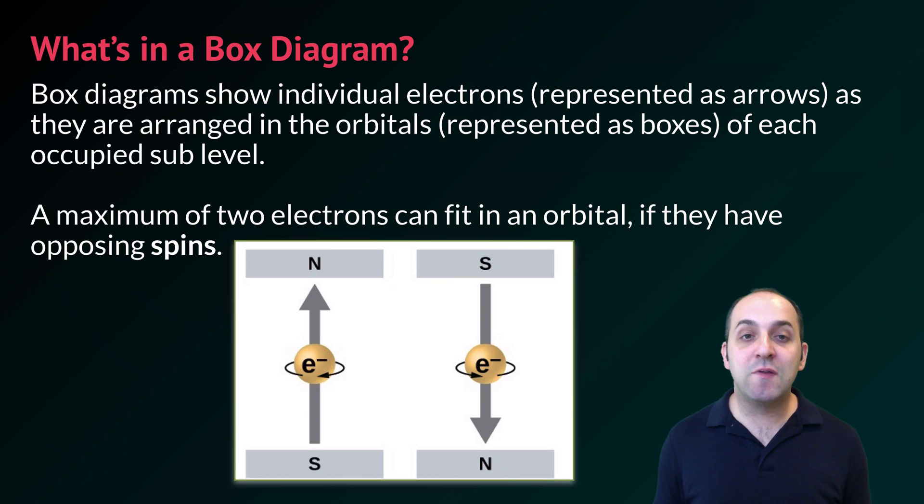So a box diagram is going to show individual electrons, which we're going to represent as arrows. And we're going to put those arrows into their specific orbitals, which we're going to represent as boxes of each occupied sublevel in the atom.